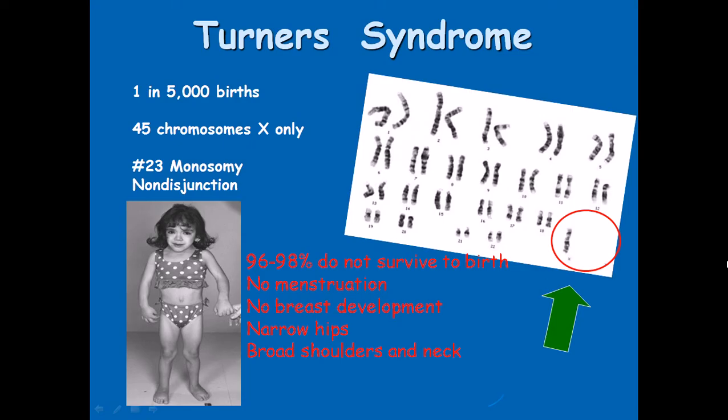Individuals with Turner syndrome have only 45 chromosomes — one X chromosome is deleted. The survival rate is very low: 96 to 98 percent do not survive to birth. Whoever survives — one in five thousand births — has difficulty including no menstruation, no breast development, narrow hips, broad shoulders, and webbed neck.